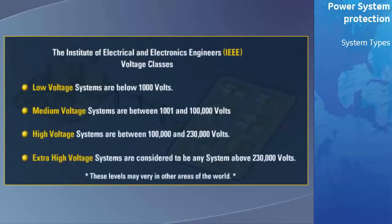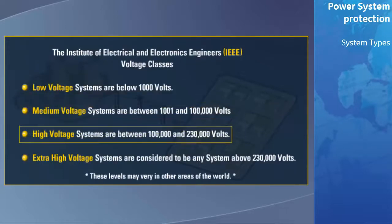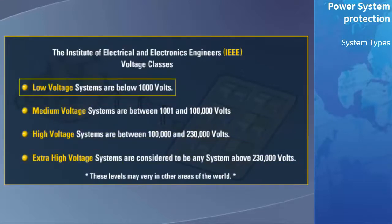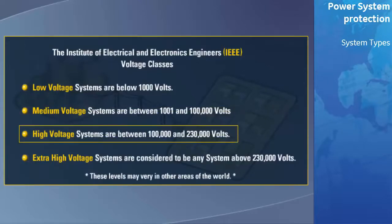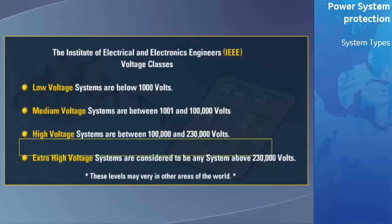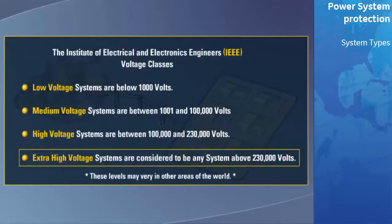The Institute of Electrical and Electronics Engineers, sometimes referred to as the IEEE, have divided voltage systems into low, medium, high voltage, and extra high classes. Low voltage systems are below 1,000 volts. Medium voltage systems are between 1,001 and 100,000 volts. High voltage systems are between 100,000 and 230,000 volts. And extra high voltage systems are considered to be any system above 230,000 volts. The voltage levels may vary in different parts of the world, but the names of the classes for the most part remain consistent.